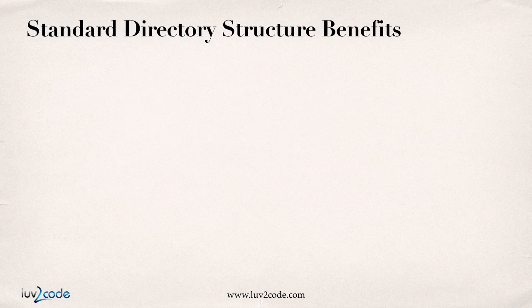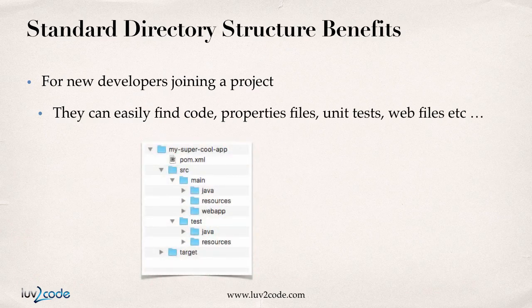Now, what are the benefits of the standard directory structure? For new developers joining a project, they can easily find code, properties files, unit tests, web files, and so on. This is very important, especially on real-world projects. You can quickly join a project and know where files are located.